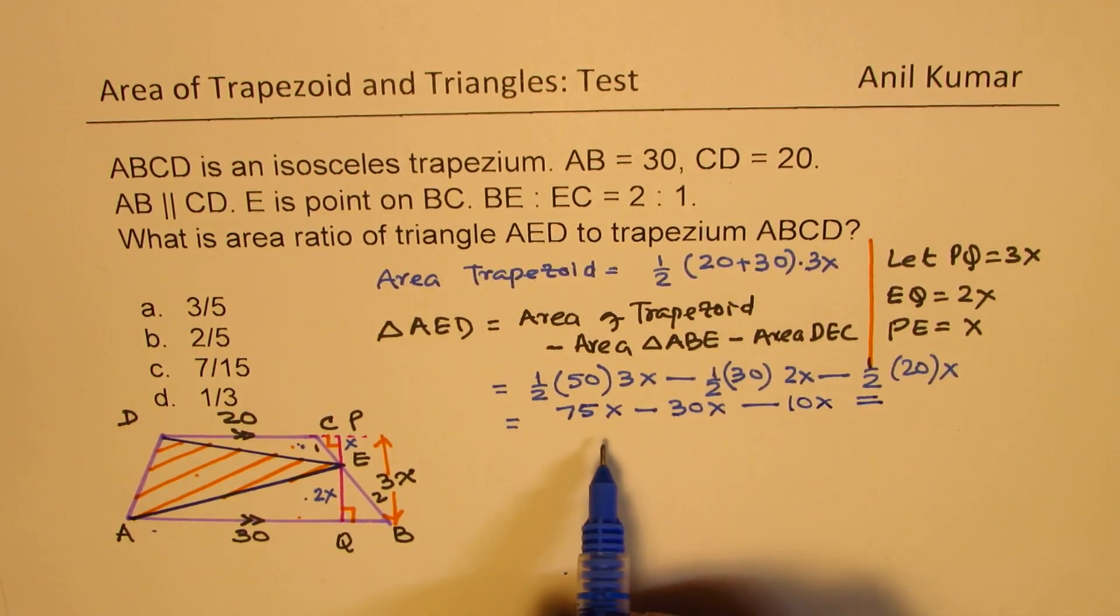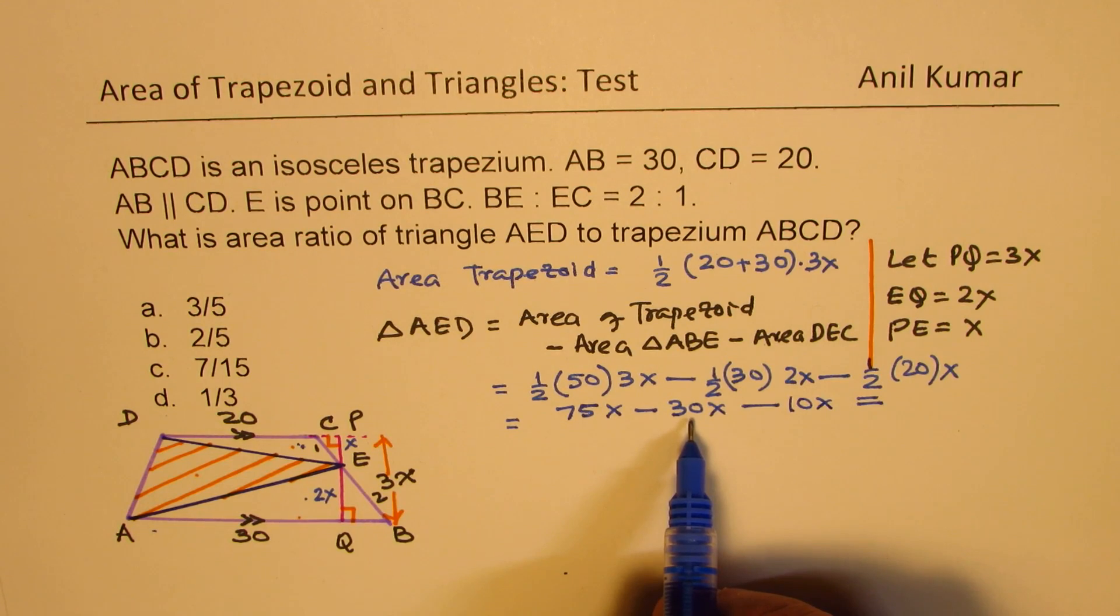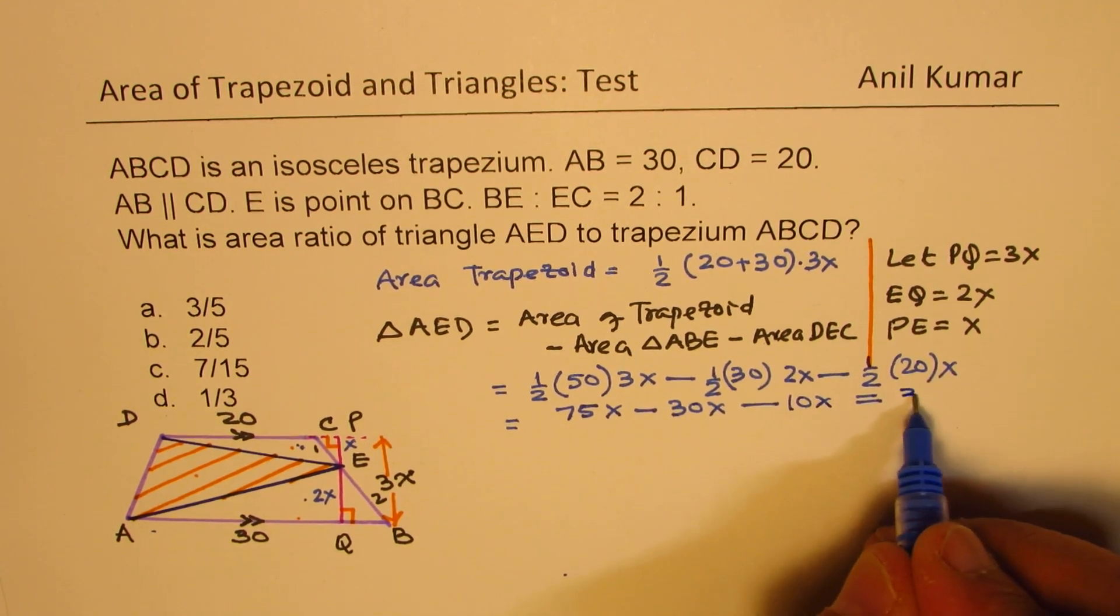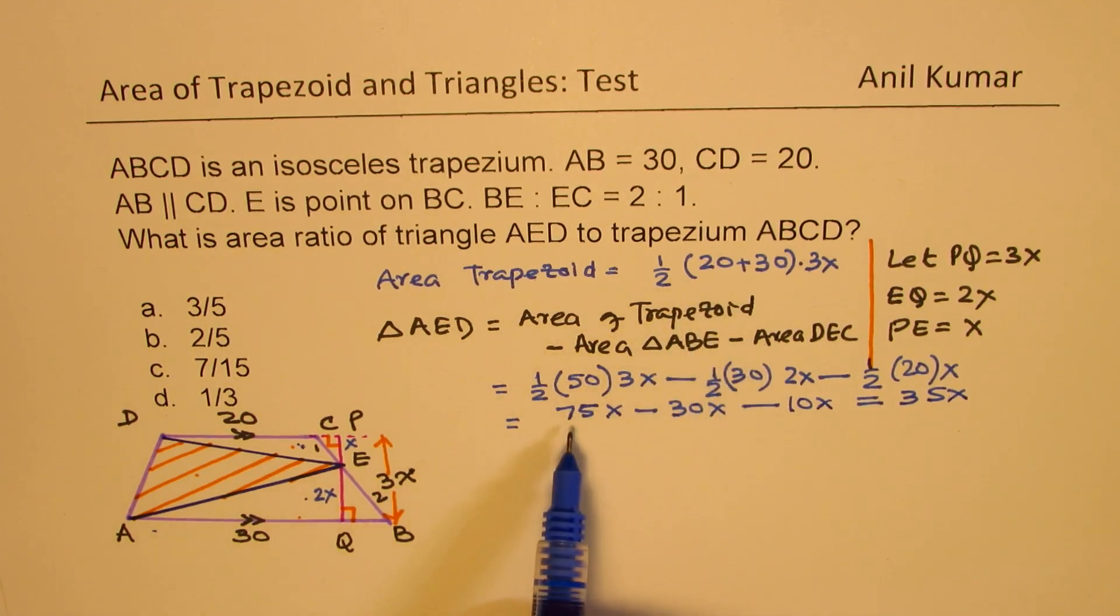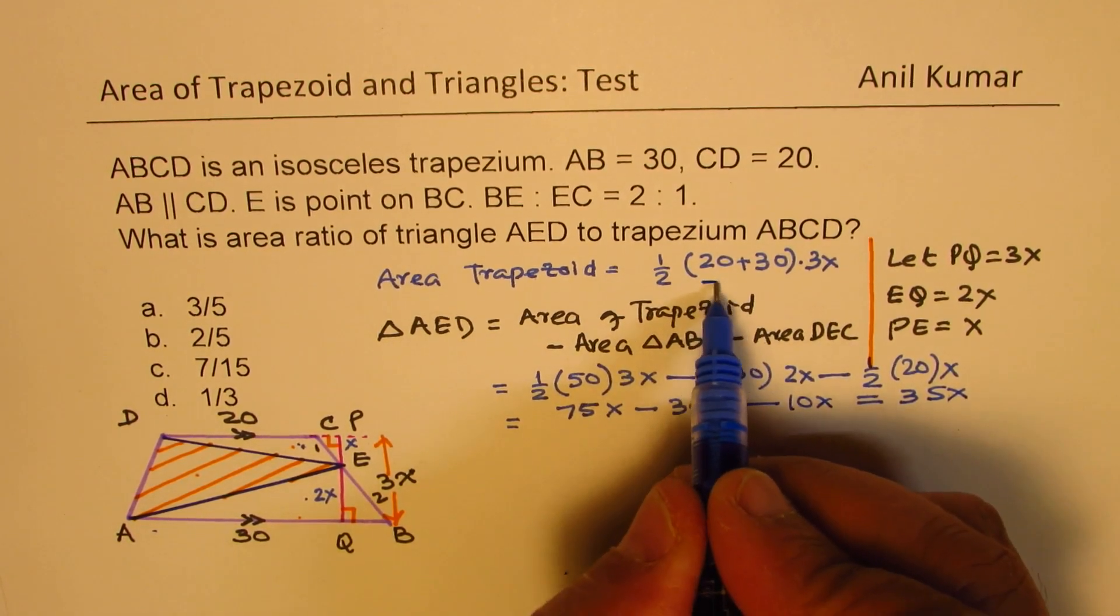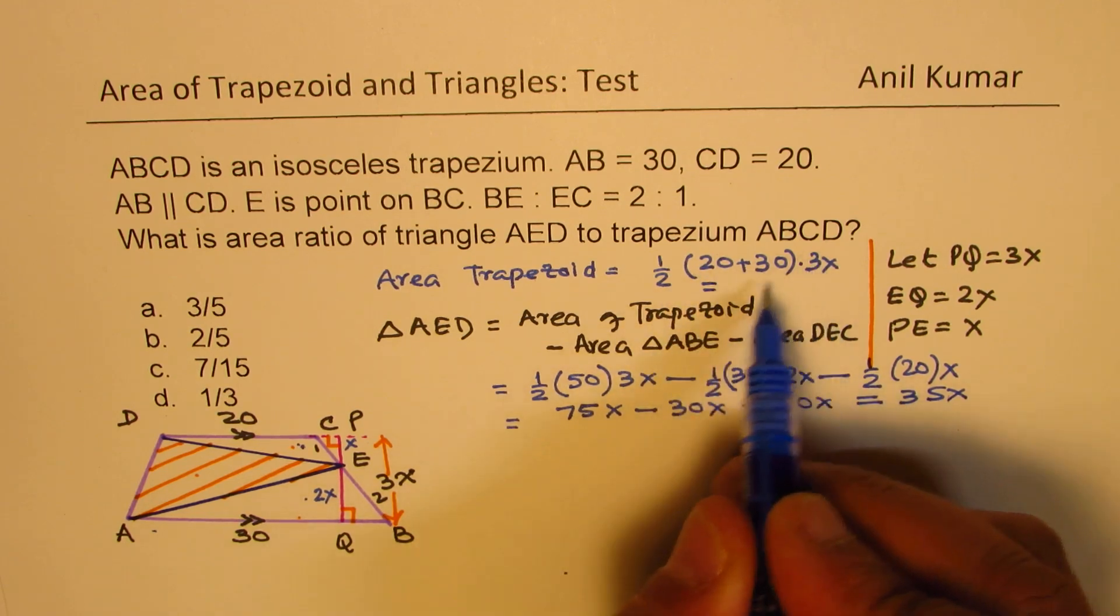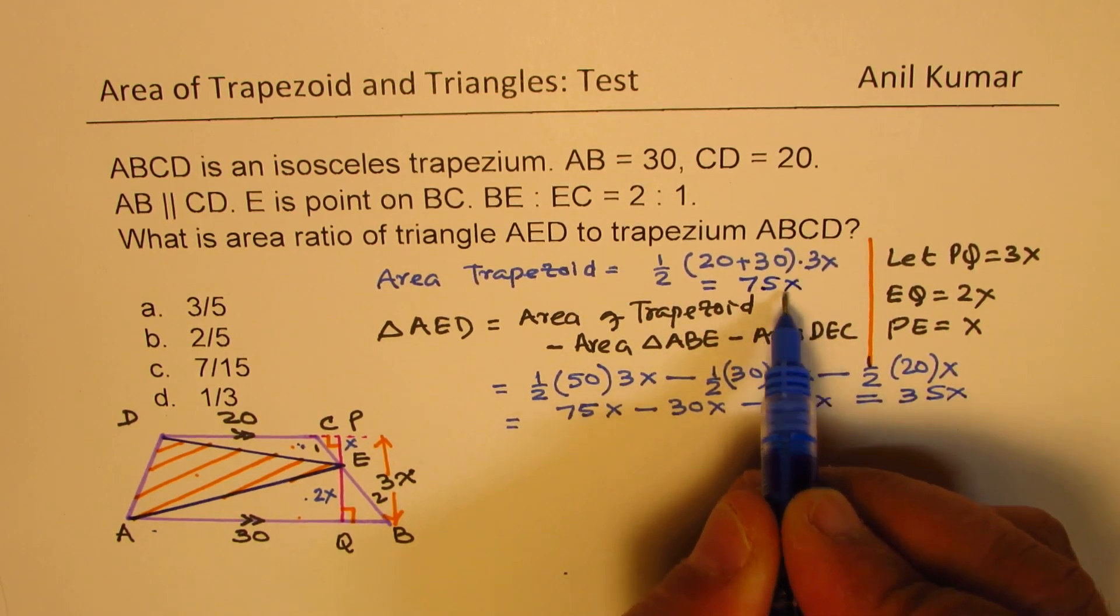And that is equal to 75 take away 30 is 45. And then we have 35X. On the other hand, area of trapezoid is 75X. This is equal to 50, half is 25, which is 75X.